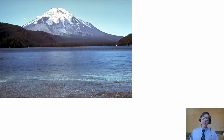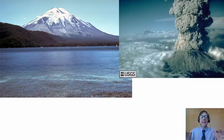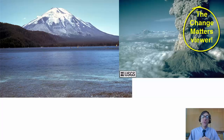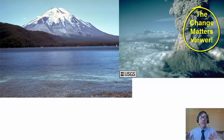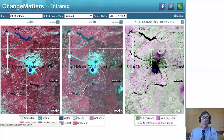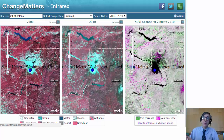Greetings folks, Joseph Kursky here to talk about analyzing changes in Mount St. Helens using the Change Matters Viewer from ESRI. The Change Matters Viewer can be used all across the world to analyze changes from human impact like urban sprawl or agricultural expansion, or from natural phenomena like volcanic eruptions or coastal erosion.